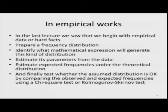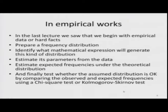In empirical works, as we saw in the last lecture, we begin with empirical data, prepare a frequency distribution, identify what mathematical expression will generate this kind of distribution, estimate parameters from the data, estimate expected frequencies under the theoretical distribution, and finally test goodness of fit — checking whether the assumed distribution is acceptable by comparing observed and expected frequencies using methods like chi-square or the Kolmogorov-Smirnov test.